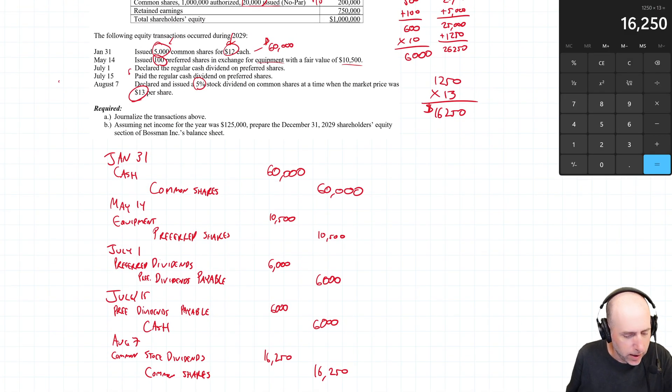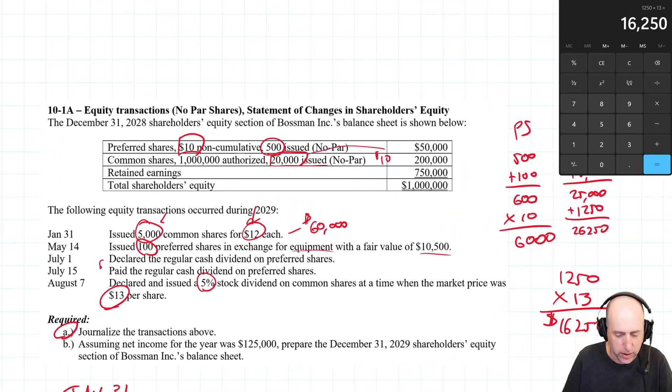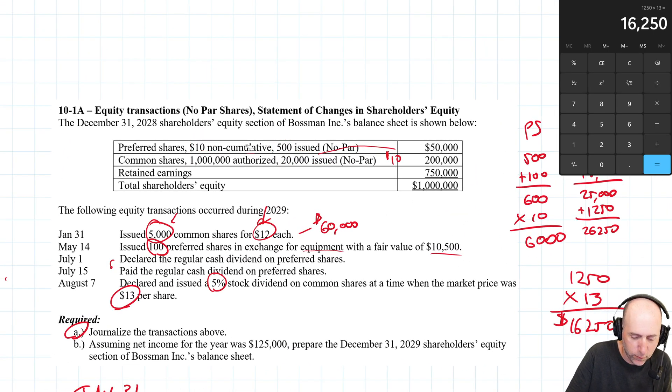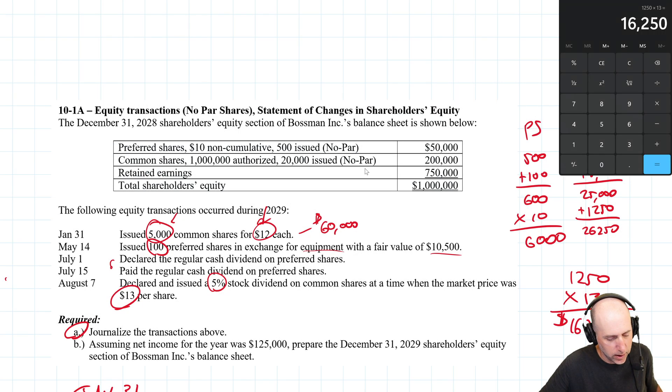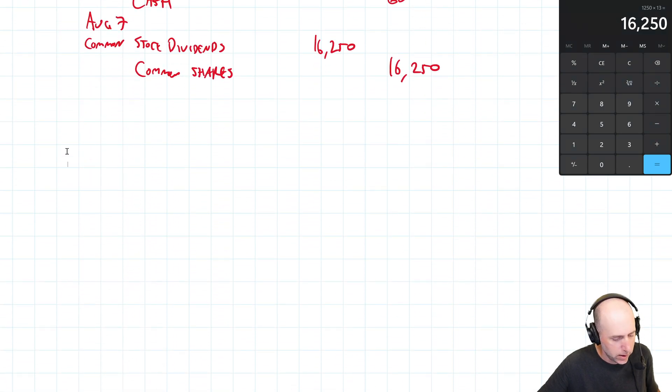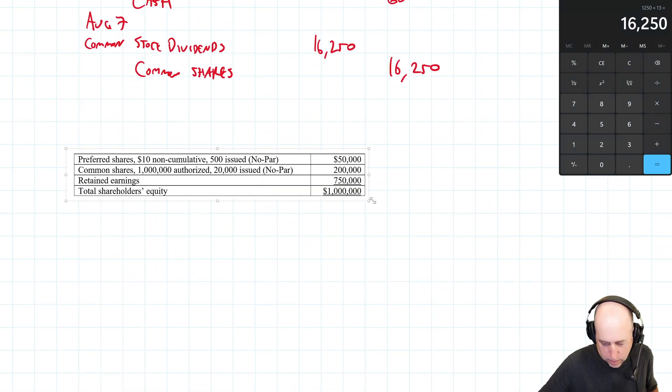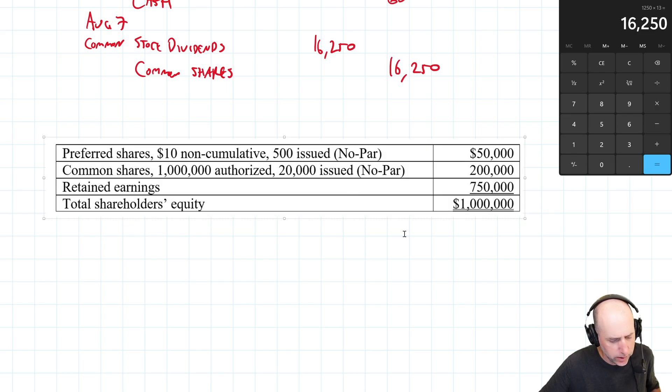We've done the first five. Now, the second part of the question. So, we've done the journal one. We've done part A. Part B says, assuming net income for the year is $125,000, prepare the December 31st, 2029 shareholder's equity section. And this is the year before shareholder's equity section we were given. And so, it's just like update this for those transactions. That's what we've got to do. So, let's do it. Let me grab that. Pull that across. There we go. Beautiful. Okay.